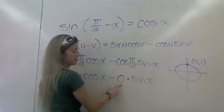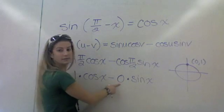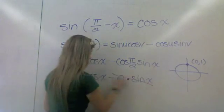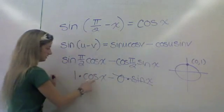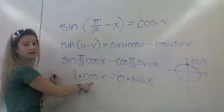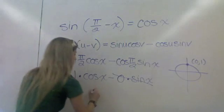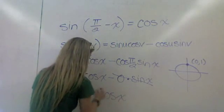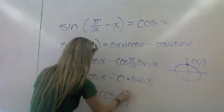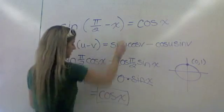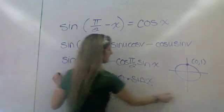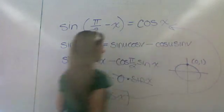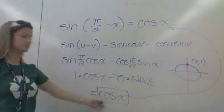So substituting in: sine of pi over 2 is 1 times cosine of x, minus cosine of pi over 2 which is 0, times sine of x. Anything times 0 goes away, and 1 times cosine of x is simply cosine of x. And that is what we were trying to prove, so we did.